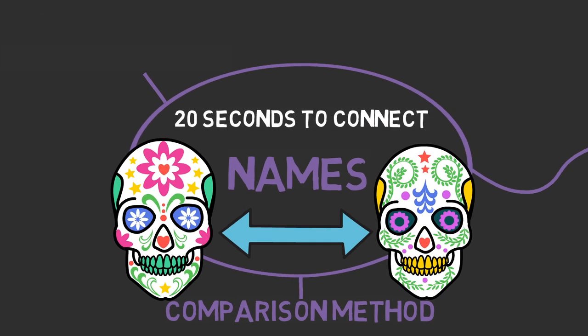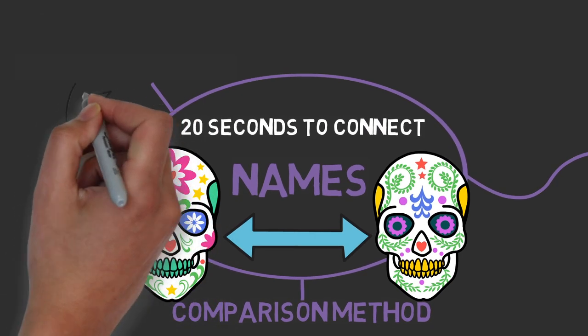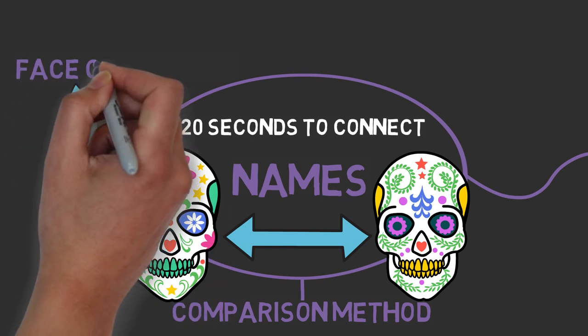For the second method, find an outstanding feature in the person's face, like their nose, eyes, or ears, and link them to their name.